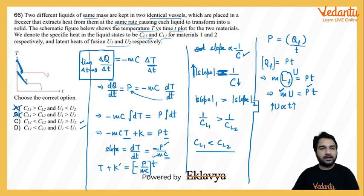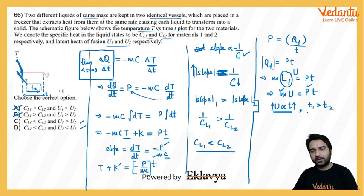So please observe, if we talk about the first graph, then in first graph you can see that this liquid takes this much amount of time to fuse at constant temperature, whereas second material takes this much time to freeze. We can say that time taken by the second material to freeze is less than the time taken by the first material. So we can simply say, if t1 is greater than t2, then from this relation, U proportional to t relation, we can say U1 is greater than U2.